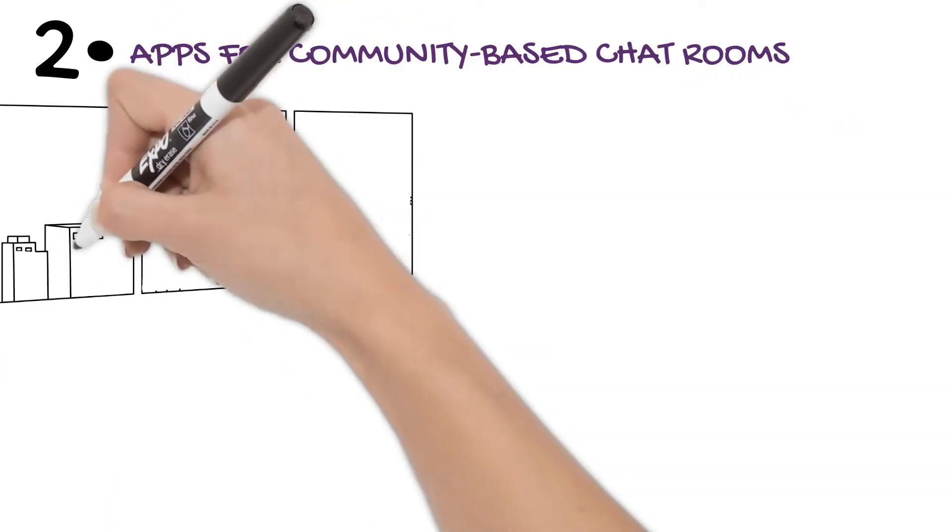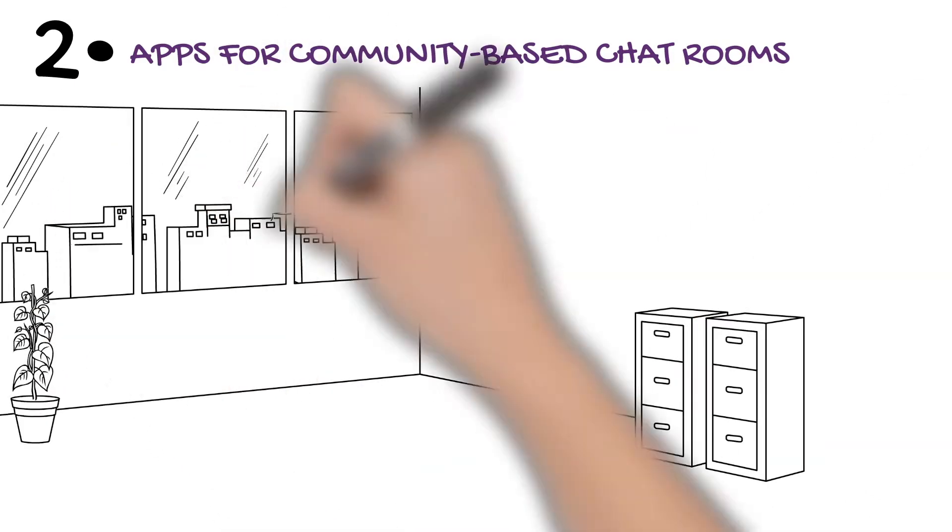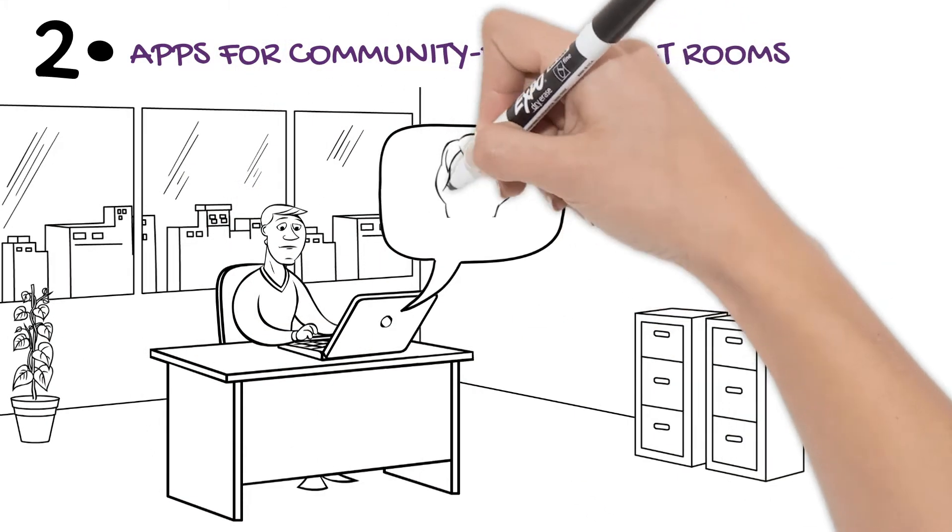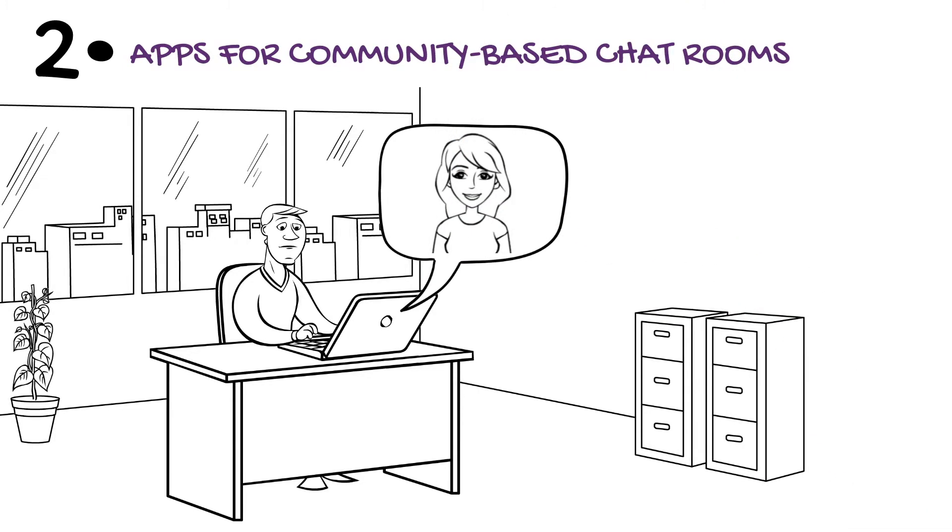Type two: Apps for community-based chat rooms. These apps are also easy, inexpensive or free, and self-directed, but they provide the option of talking with other individuals. These chat rooms are often moderated, but advice from others may not be supported by evidence. An example of this is BetterHelp.